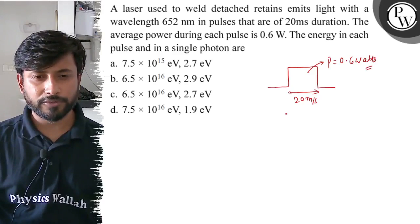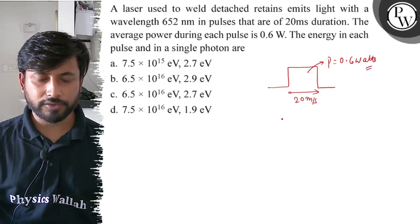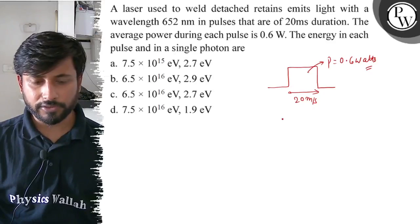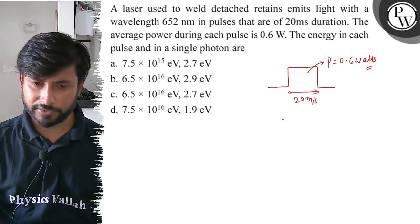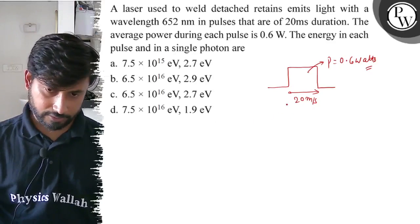Option A: 7.5 × 10^15 eV, 2.7 eV. B: 6.5 × 10^16 eV, 2.9 eV. C: 6.5 × 10^16 eV, 2.7 eV. Option D: 7.5 × 10^16 eV, 1.9 eV.